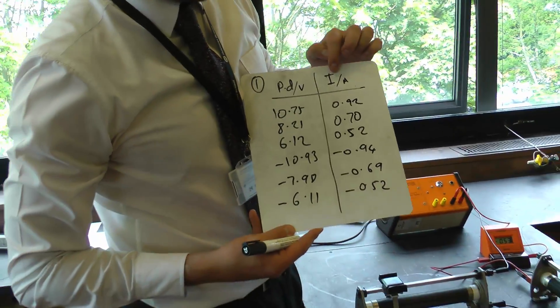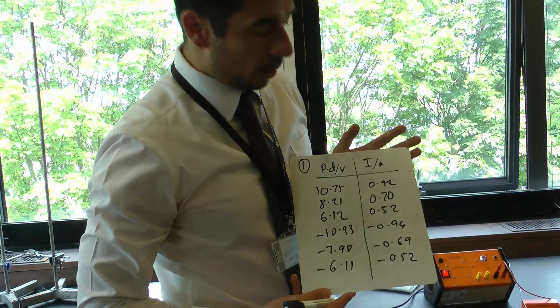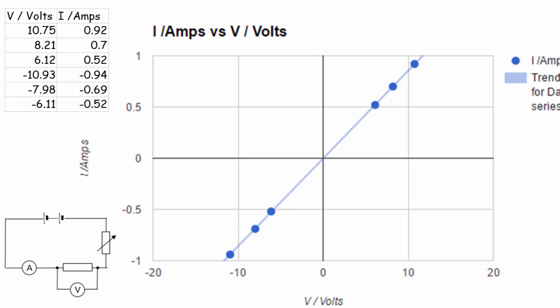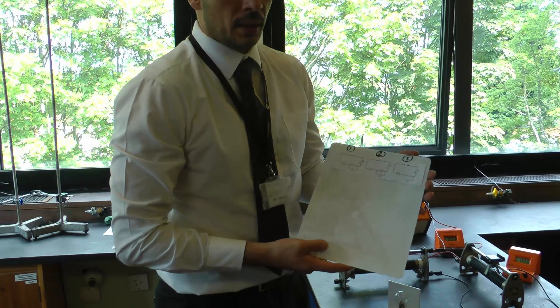So if we look at these results now, I'm going to plot these in a graph of current against voltage, and hopefully we'll get this nice straight line that we're supposed to get.